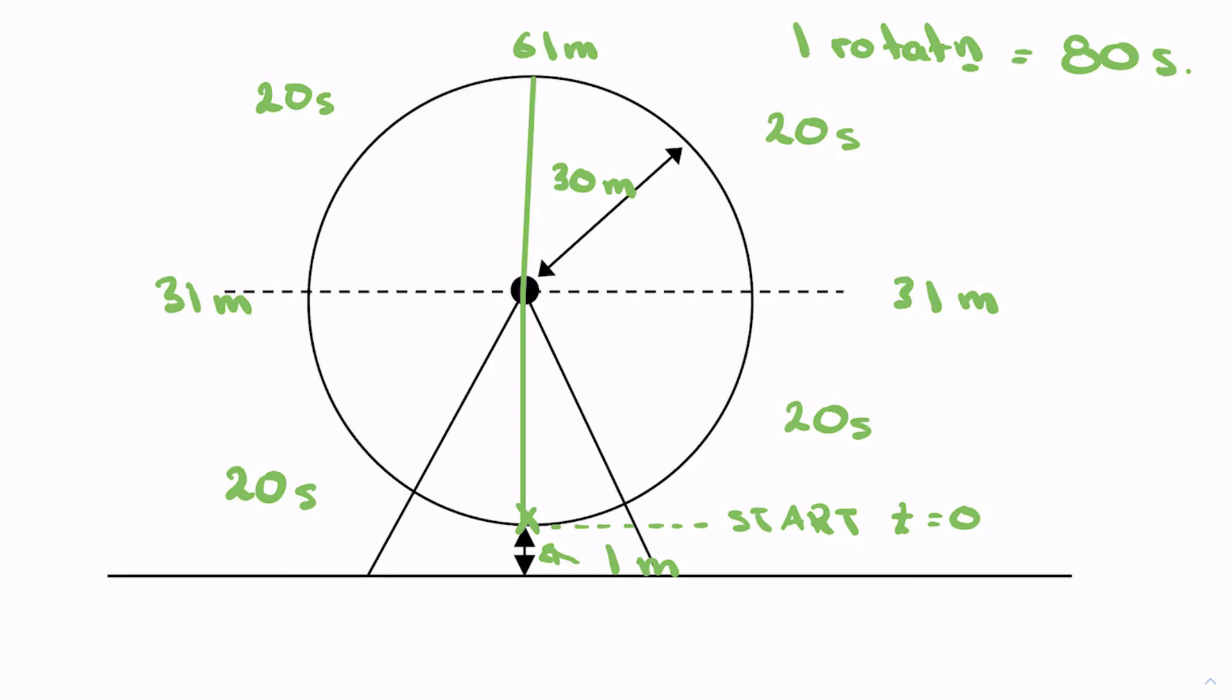So we have here a whole bunch—we'll do that with a broken line since it's really broken on the diagram. 61 at the top. I got one meter at the bottom, 31 at the sides, and I think I'm good to draw a rough sketch of this graph.